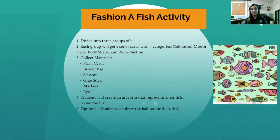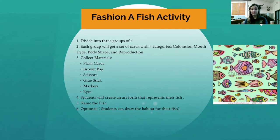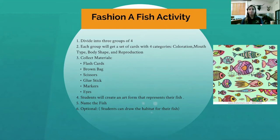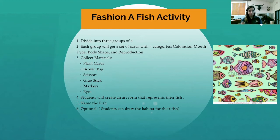Now for the fun part — we're going to start our activity, Fashion Fish. You can do it by yourself or in groups of three or four. Each group is going to get a set of cards, or if you're an individual you'll get to pick a card from four different categories: coloration, mouth, body type, and reproduction.